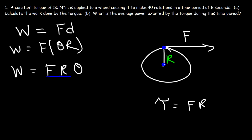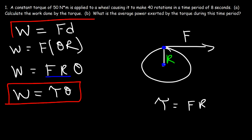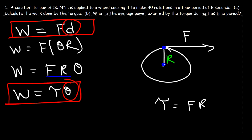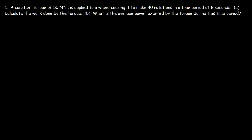Force times radius equals the torque acting on the wheel, so the work done by a torque is basically the torque times angular displacement. Notice the similarities between the two equations: torque is the rotational equivalent of force, and angular displacement is the rotational equivalent of linear displacement. The work done by the torque equals the torque times the angular displacement.